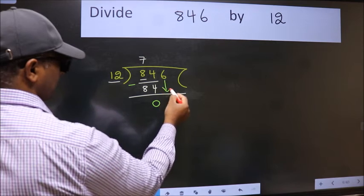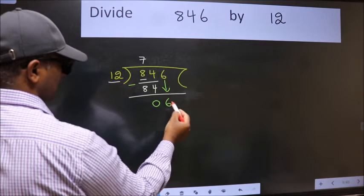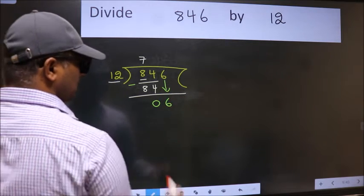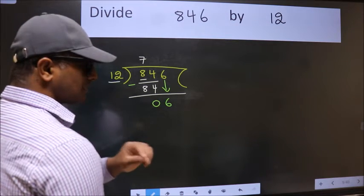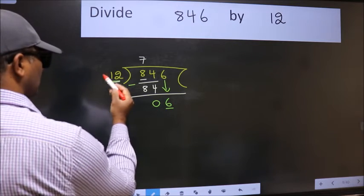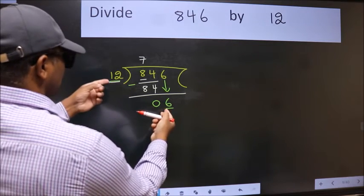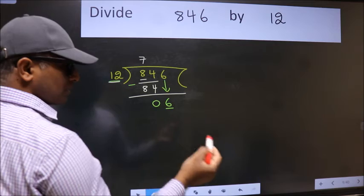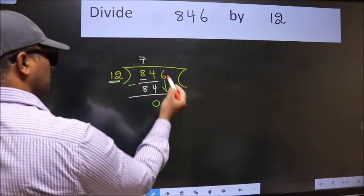After this, bring down the beside number, so 6 down. After this step, the mistake happens. Here we have 6 and here 12. 6 is smaller than 12, so what many do is they directly put dot, take 0, which is wrong.